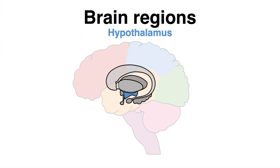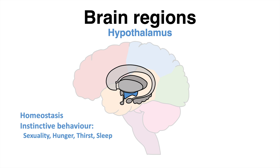The hypothalamus predominantly overtakes the important role of homeostasis — in other words, the maintenance of largely constant conditions in our system. The hypothalamus is also known for its involvement in regulating our instinctive behavior, including sexuality, hunger, thirst and the circadian rhythm, which controls our sleep.